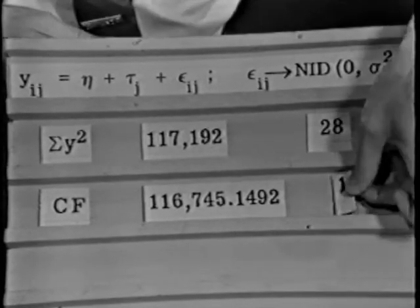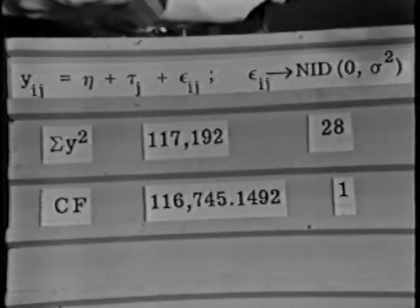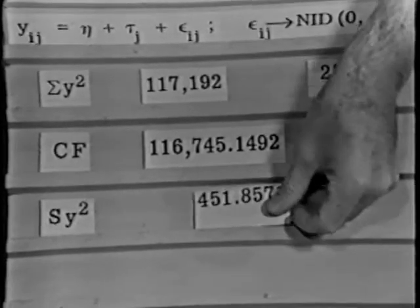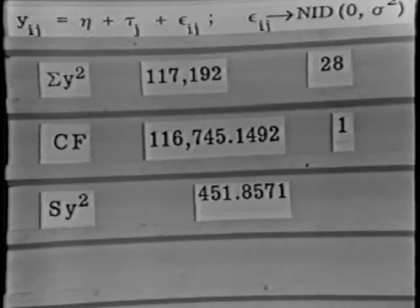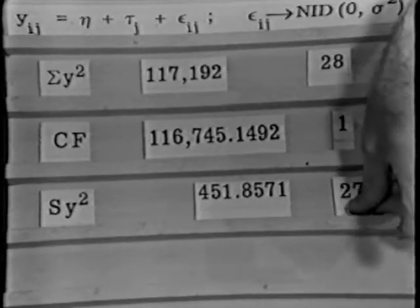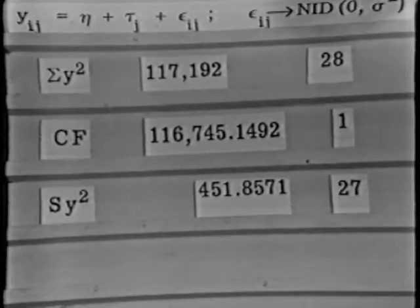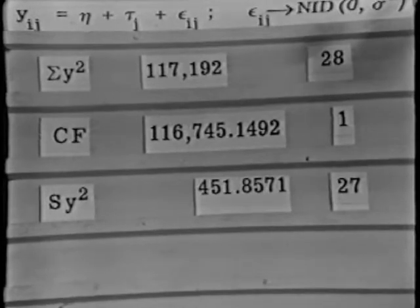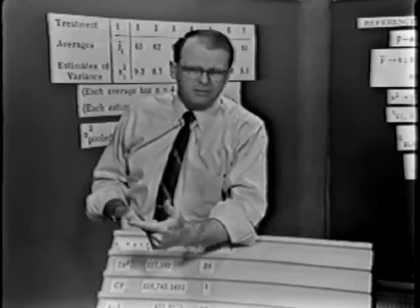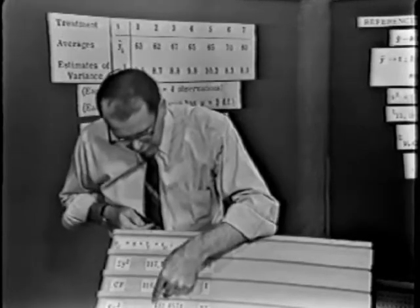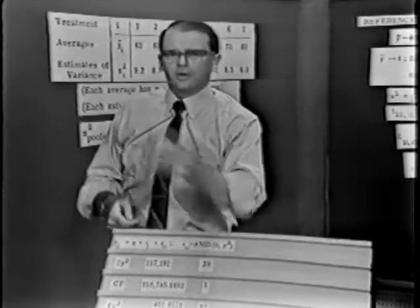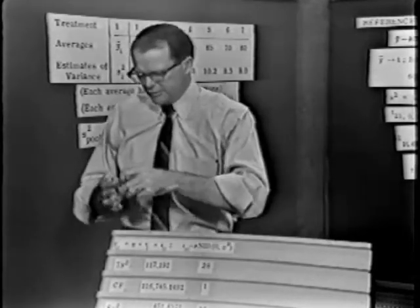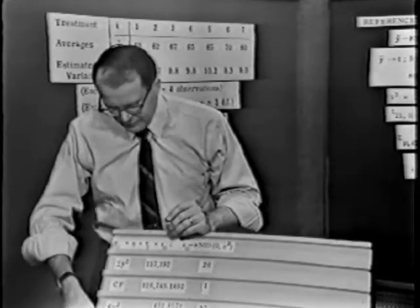That degree of freedom was really spent in getting the grand average of all the observations. So that would give me for my corrected sum of squares, a modest number, 451.8571, and it would have 27 degrees of freedom. Now, if there were no treatment effects, that 27 degrees of freedom divided into that sum of squares would give me an estimate of the variance. But we suspect there may be treatment differences after all. So what do you say we take this 451 and split it into two components, a component due to the treatment sum of squares, and a component due to residual or error sum of squares.